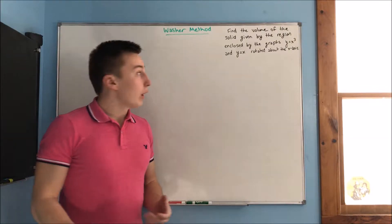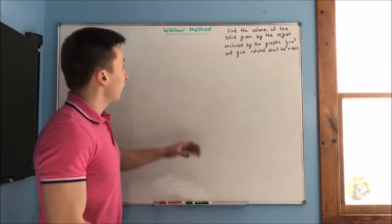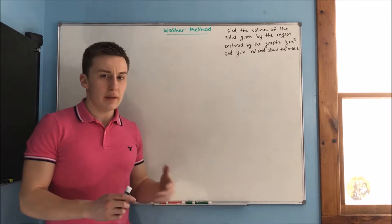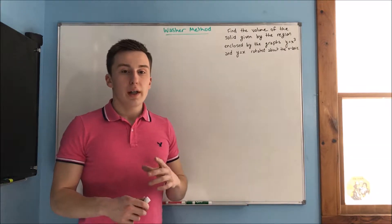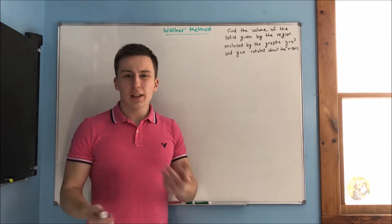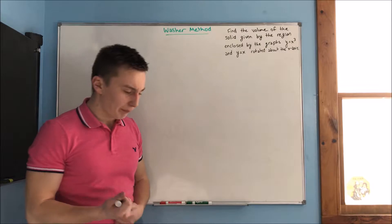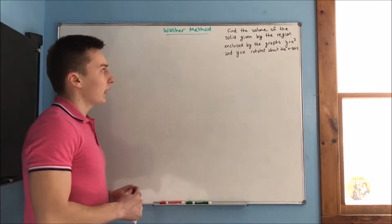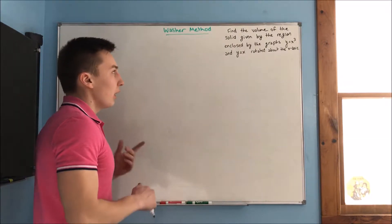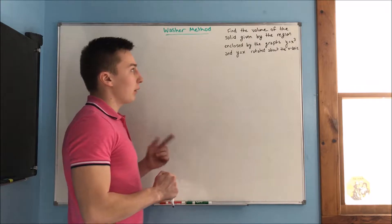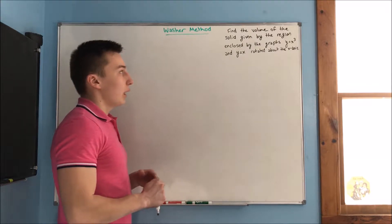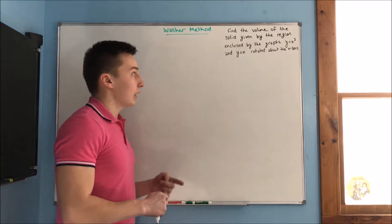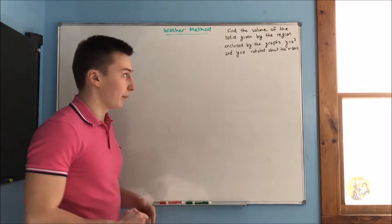In this video we are going to be doing some examples with the washer method. These aren't going to be anything too difficult but they are going to give you an idea of what you are going to see. So we have our first example: find the volume of the solid given by the region enclosed by the graphs y equals x cubed and y equals x, rotated about the x axis.